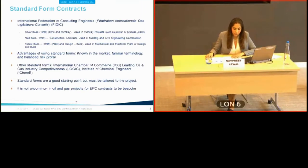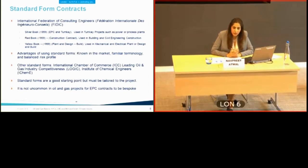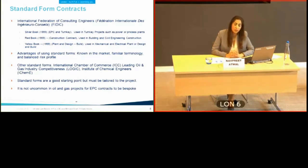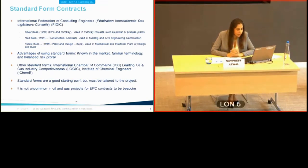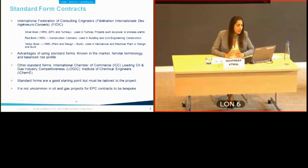The well-known international standard form of construction contract in oil and gas is FIDIC, the International Federation of Consulting Engineers. The Rainbow Suite is the one used, with different contracting methods allocated colours: the silver book is the turnkey EPC conditions used in power and process plants; the red book is for building and civil engineering; and the yellow book is for design and build in mechanical and electrical plant.